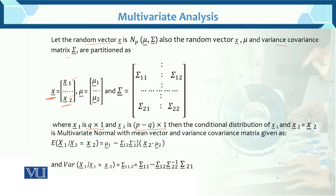We determined the dimensions in the previous lecture. So x1 and x2, where mu equals mu1 and mu2 — this is not a scalar but a vector. And the variance-covariance matrix is partitioned as sigma1 and sigma2. This is the partition matrix.